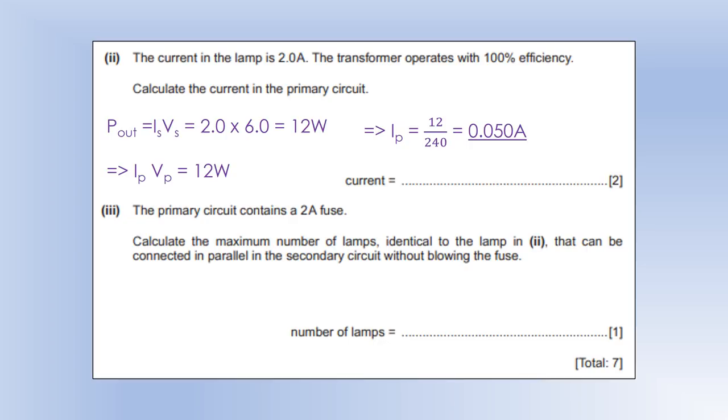So the primary circuit contains a 2 amp fuse. Calculate the maximum number of lamps that can be connected in parallel. So if we're in parallel, their currents are going to be adding together. So we're going to do 2 amps divided by the current for each lamp gives us 40 lamps to blow the fuse there. So really, I guess you could think about it, maybe we should be putting 39 here, because actually, well, we don't want to blow the fuse, so we need to stay under that 2 amp rating.